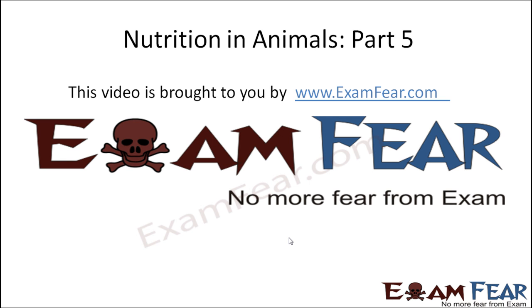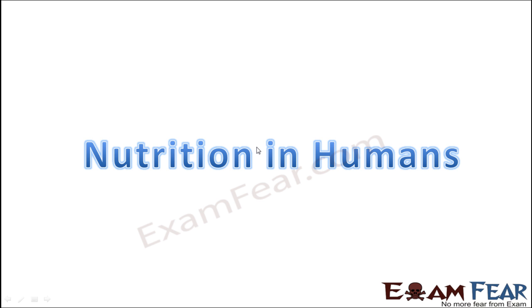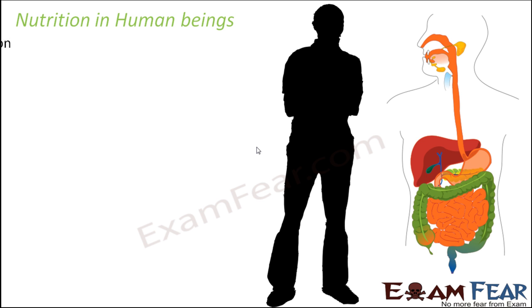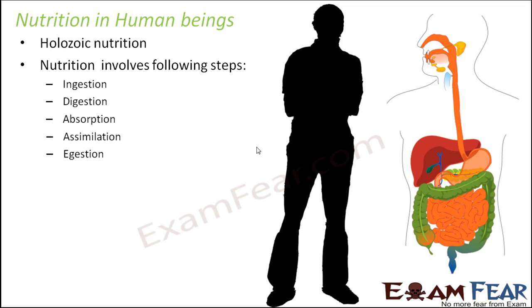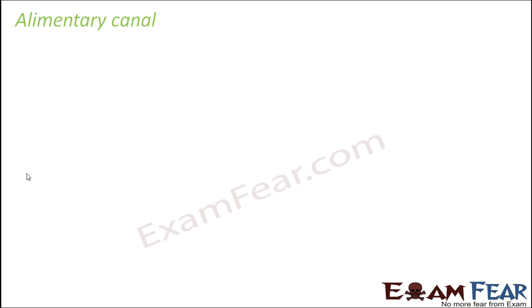This video on nutrition in animals part 5 is brought to you by examfear.com. Let us now discuss the nutrition in human beings. In human beings the nutrition is holozoic type — that is, intake of solid complex food — and it involves the same five steps: ingestion, digestion, absorption, assimilation, and egestion.